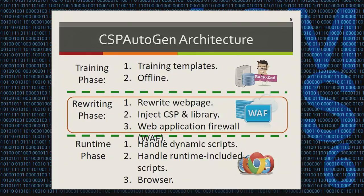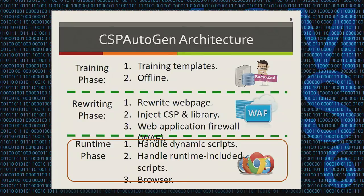In the rewriting phase, CSP Autogen will rewrite each page. Specifically, it will convert all the benign inline scripts to external scripts and inject content security policies as well as the client-side library into the web page. The client-side library is used in the runtime phase. When this rewritten page is sent to the client for execution by the browser, CSP Autogen enters the runtime phase — necessary because a lot of JavaScript is generated during client-side execution, including eval scripts and inline scripts generated by modifying the DOM tree. The client-side library ensures that benign scripts get executed and malicious ones are blocked.